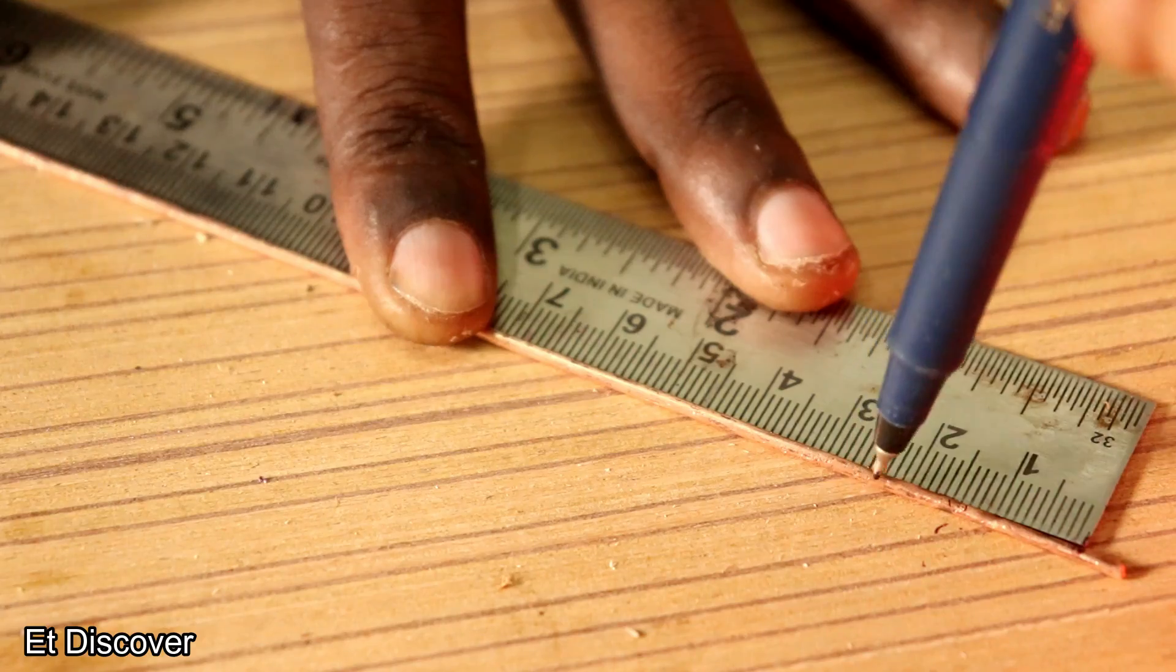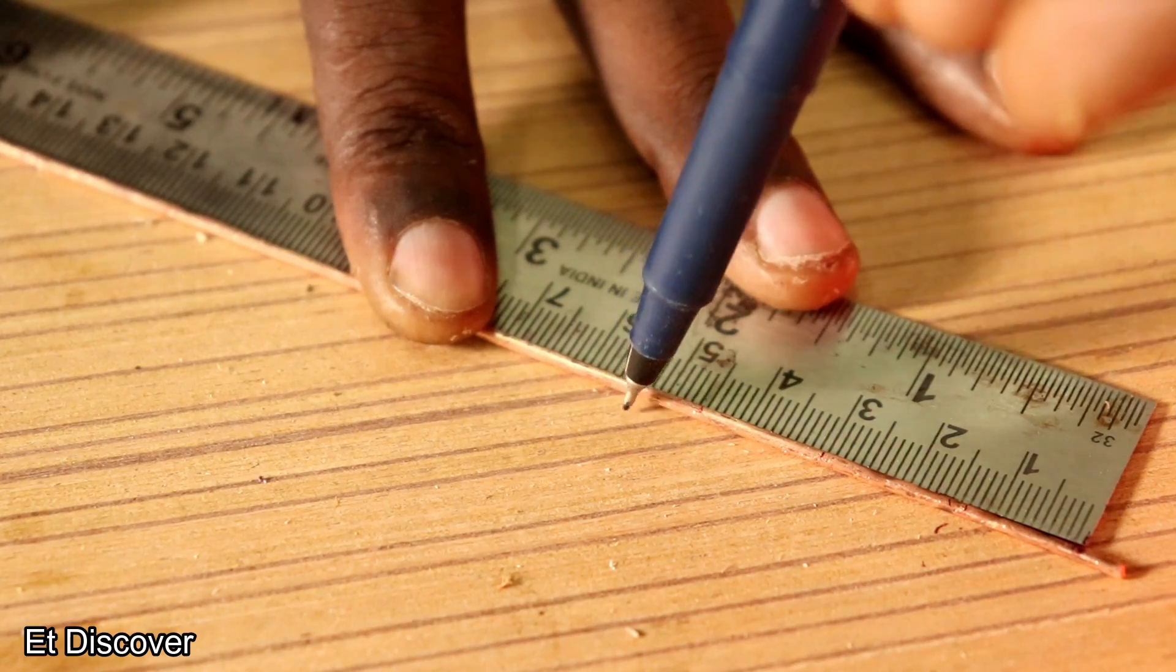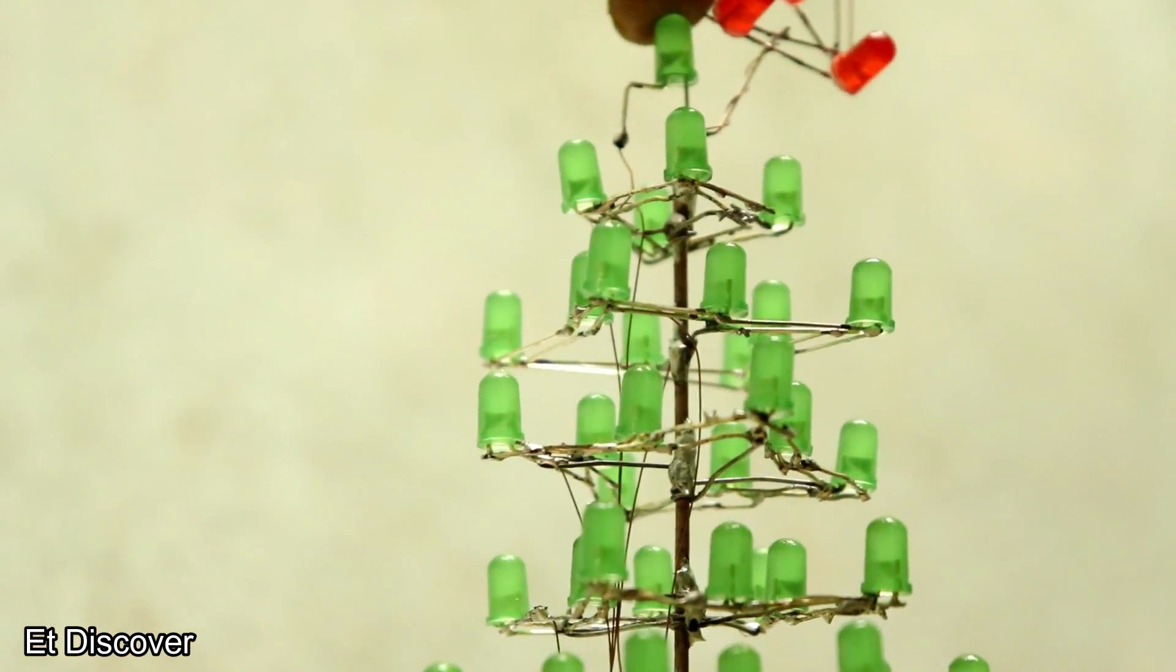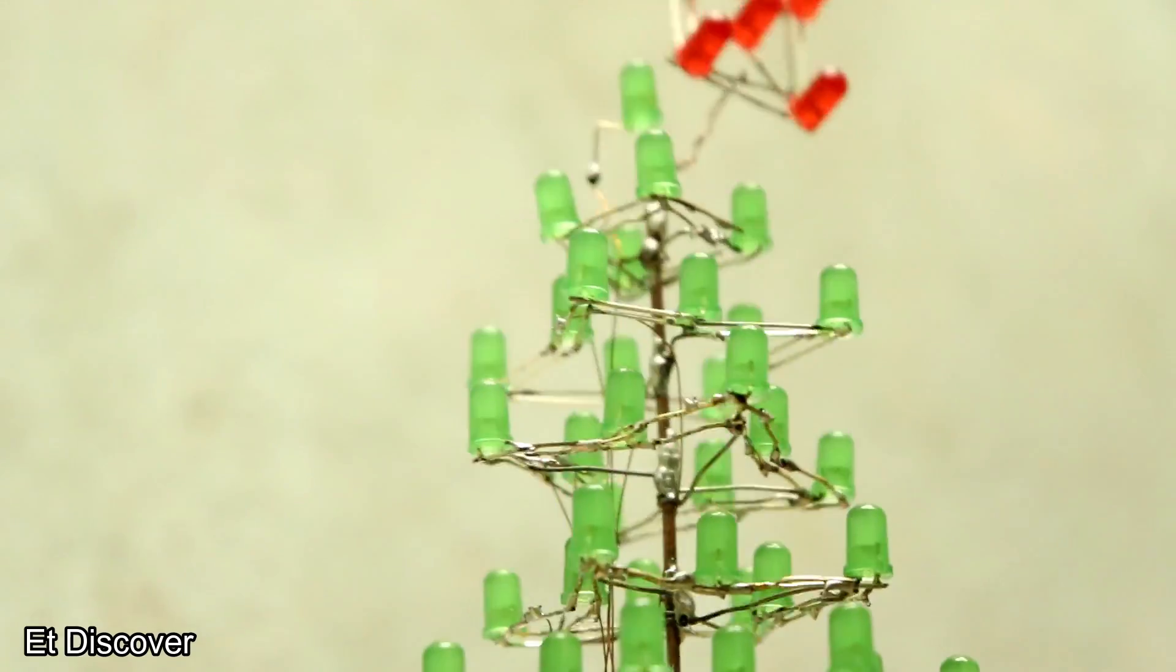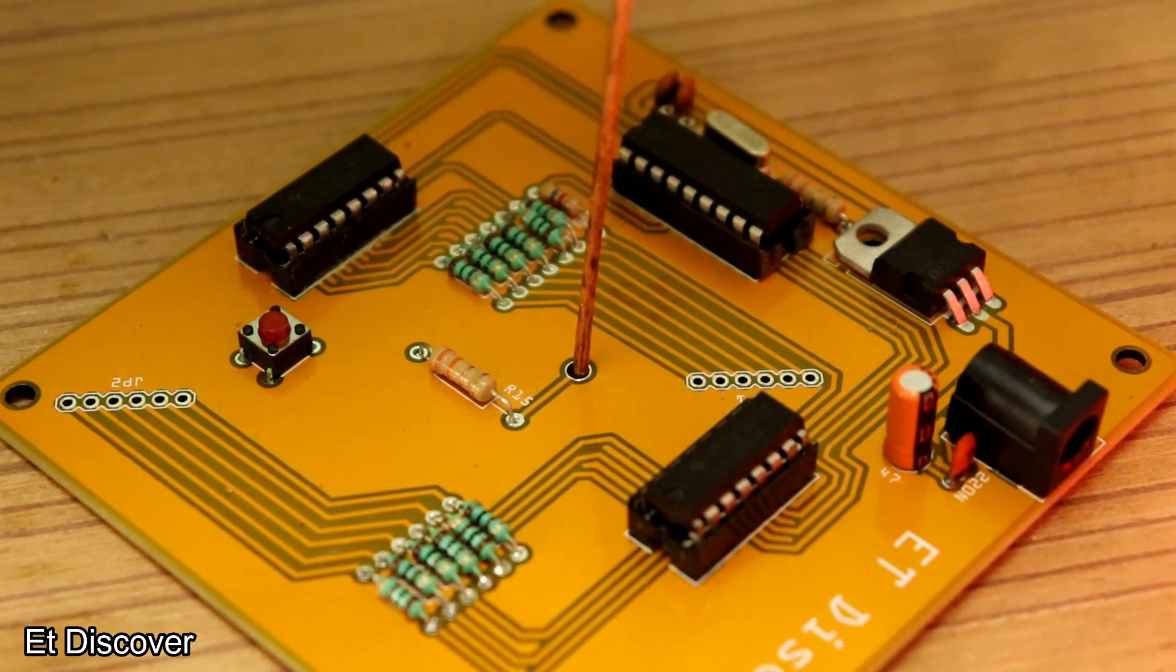Now I take a thick copper wire and measure a distance of 1.5cm and mark on it to make proper gaps in between the stars. And this thick copper wire will be the spinal support for the tree and also the positive connection.